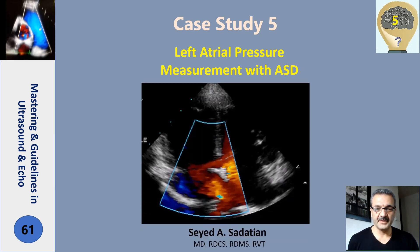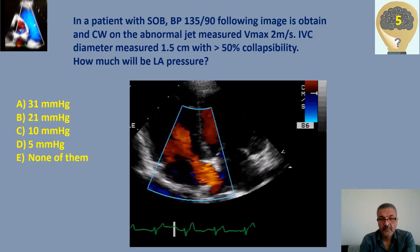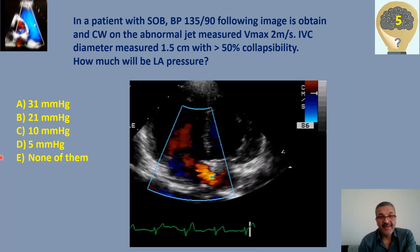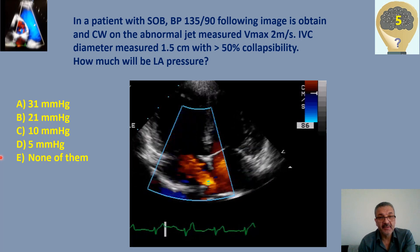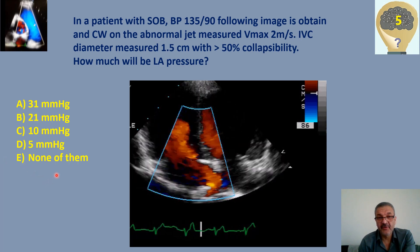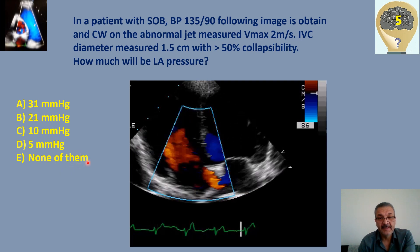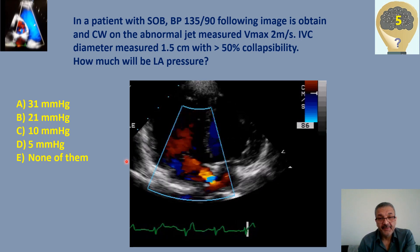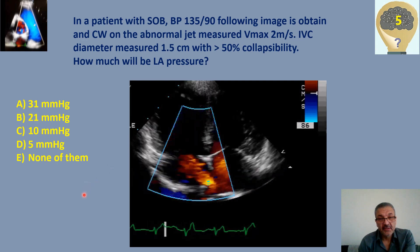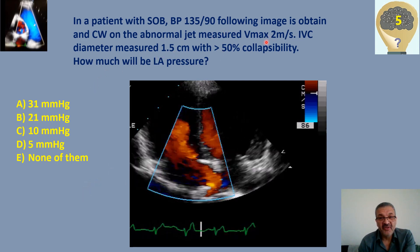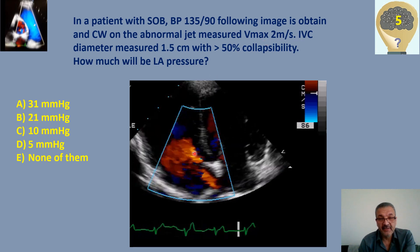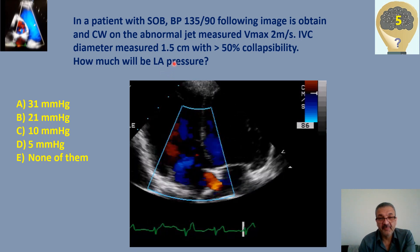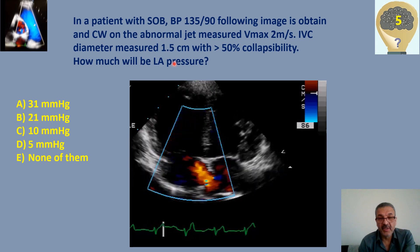Welcome to Mastering Guidelines in Ultrasound and Echo. Here we have a case: a young patient presenting with shortness of breath and blood pressure 135 over 90. On echo, we obtained this view and placed continuous wave Doppler on the jet, giving us a V max of 2 meters per second. IVC measurement was 1.5 centimeters with over 50% collapse.